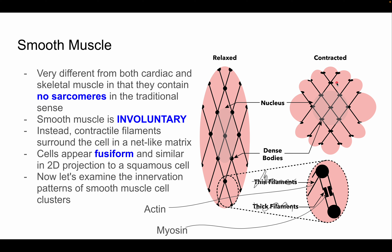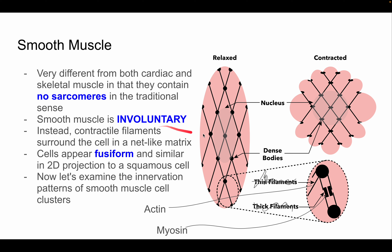The contractile filaments wrap around the cell and contract it — like those stress balls with nets around them where you squeeze them and little grapes pop out. The smooth muscle cell is fusiform in shape, which in 2D projection looks similar to a squamous cell, but they are different.